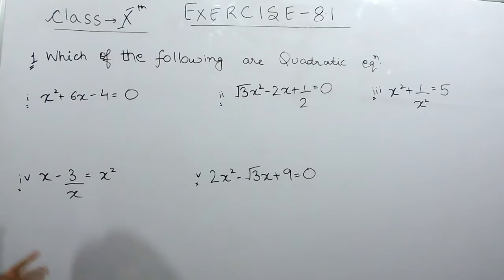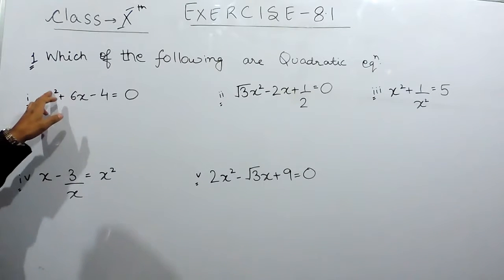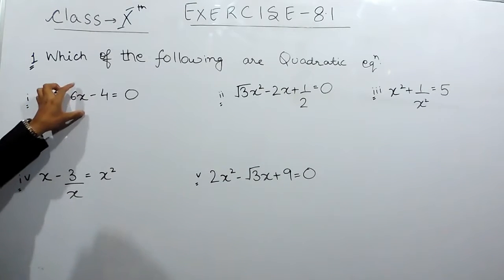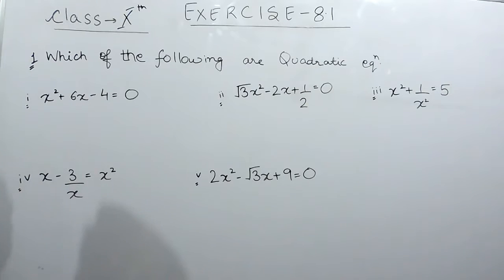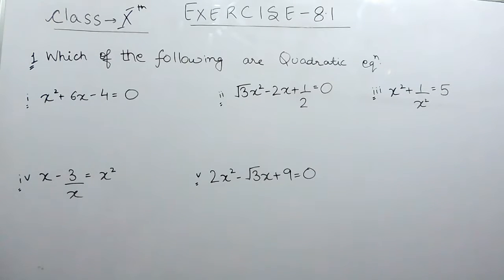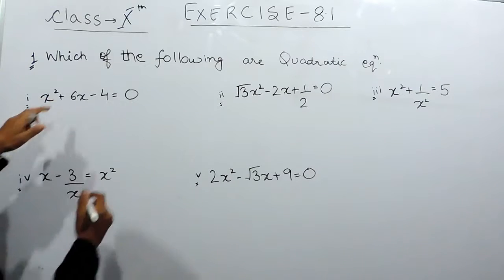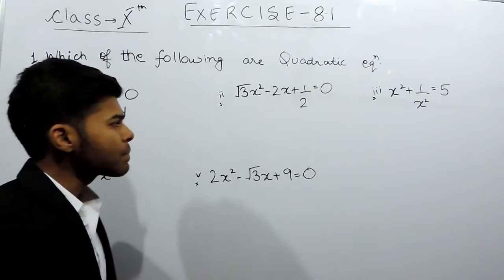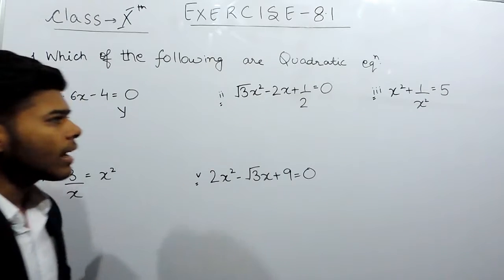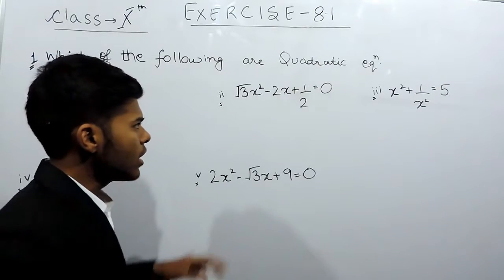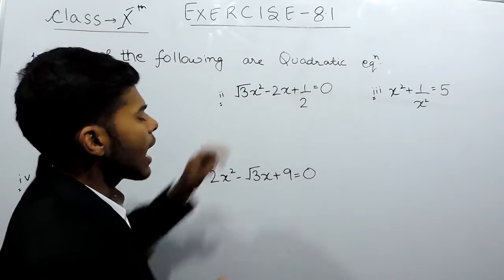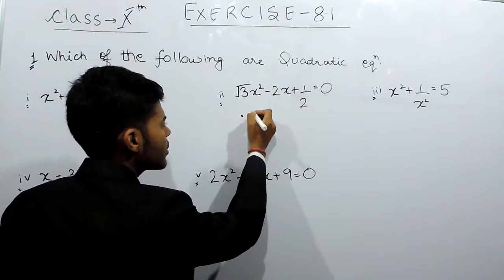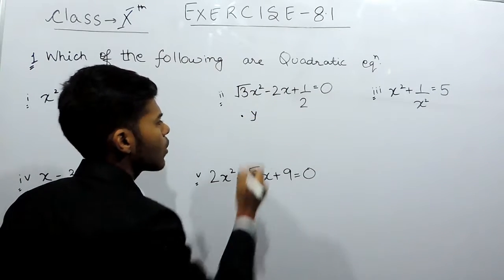A quadratic equation is an equation in which the highest degree is 2, followed by degree 1, and so on. In the first part, the highest degree is 2, so this is a quadratic equation. There might be some exceptions, which I will mention later. In the second part, again the highest degree is 2, therefore it is also a quadratic equation.